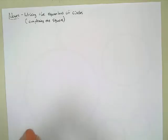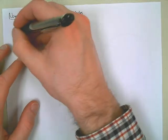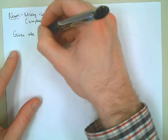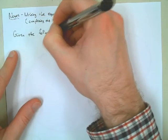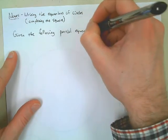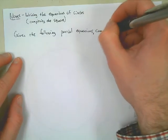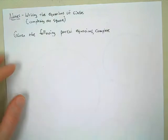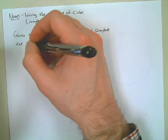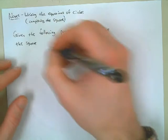All right, so we're trying to start out kind of basically here. So let's do a very basic kind of completing the square. Given the following partial equations, we want to complete the square by filling in the blank.